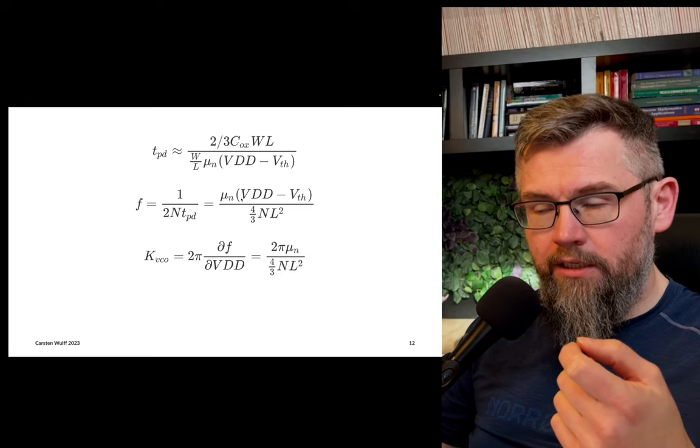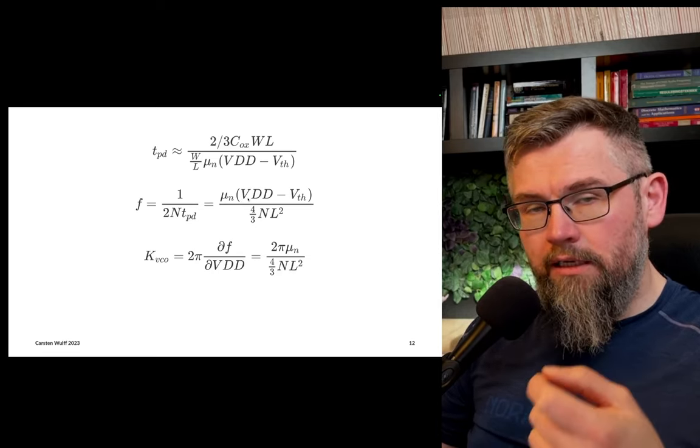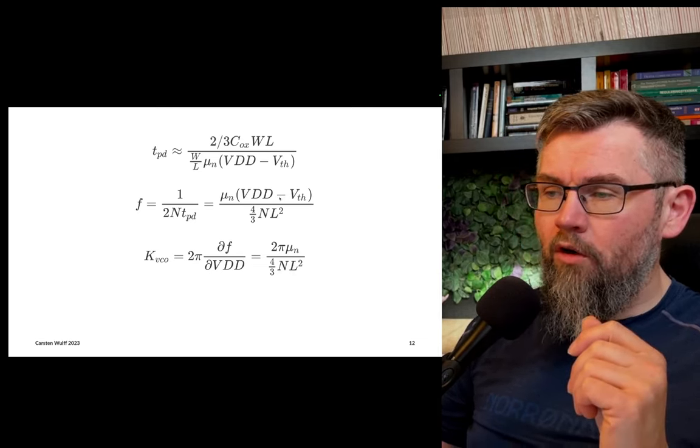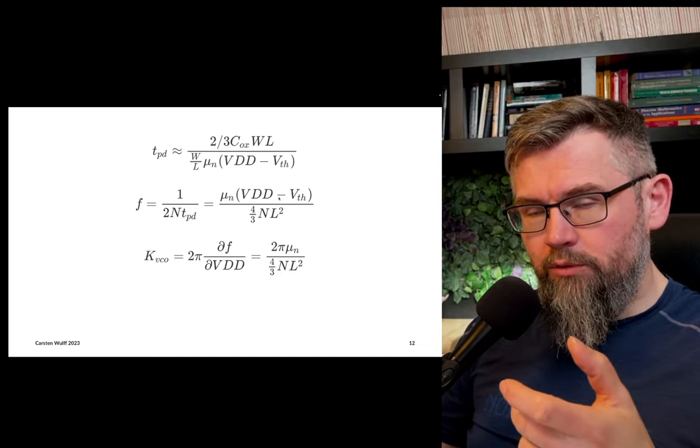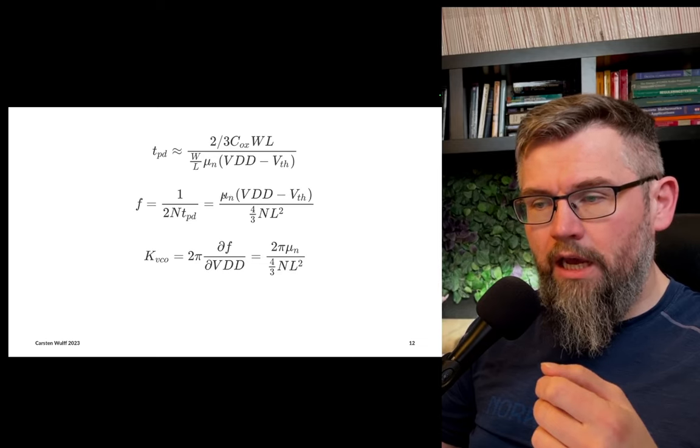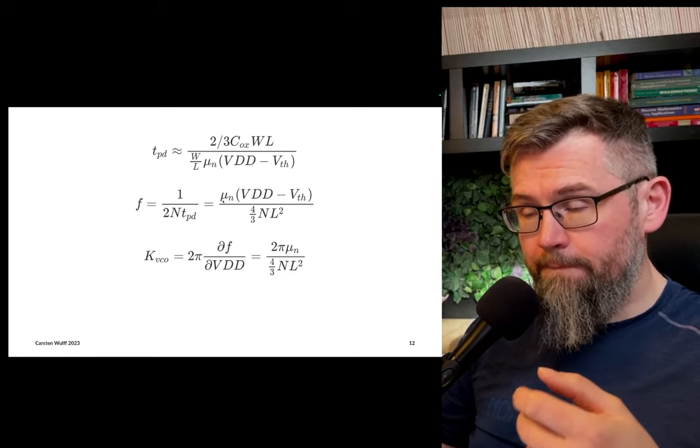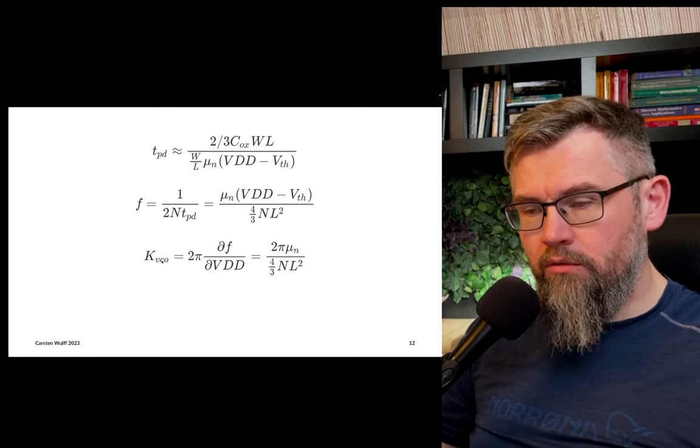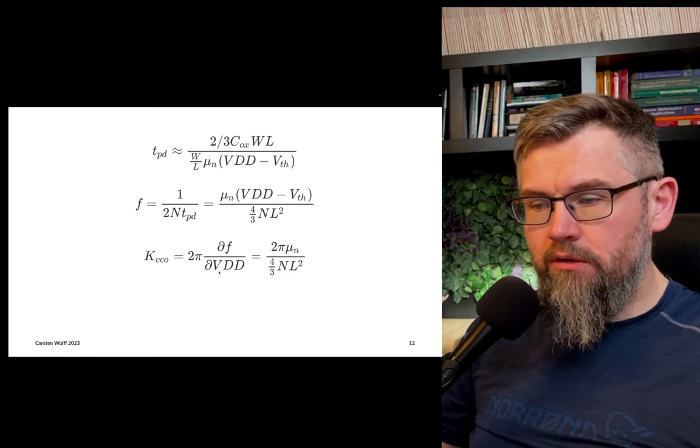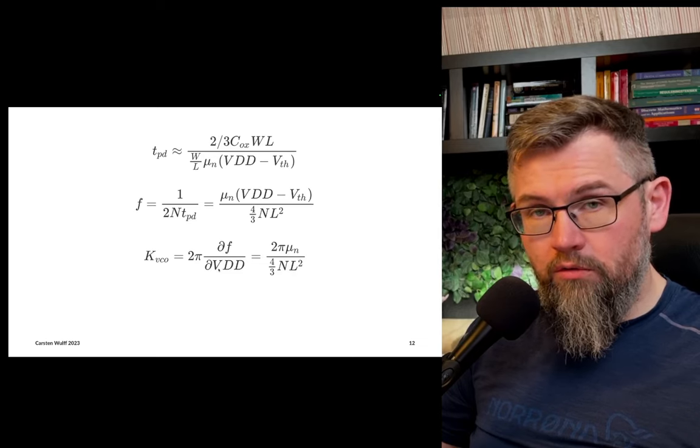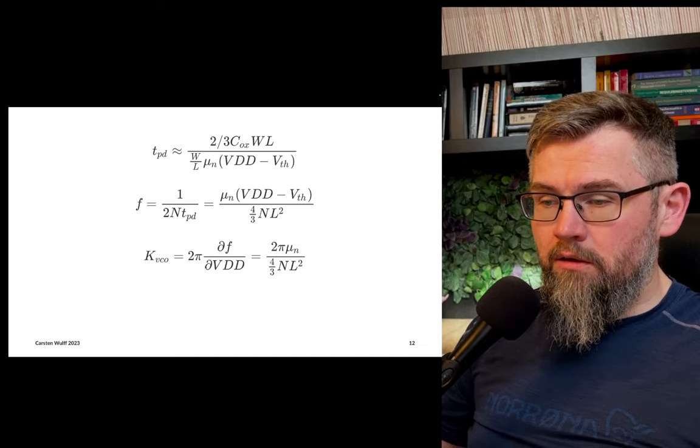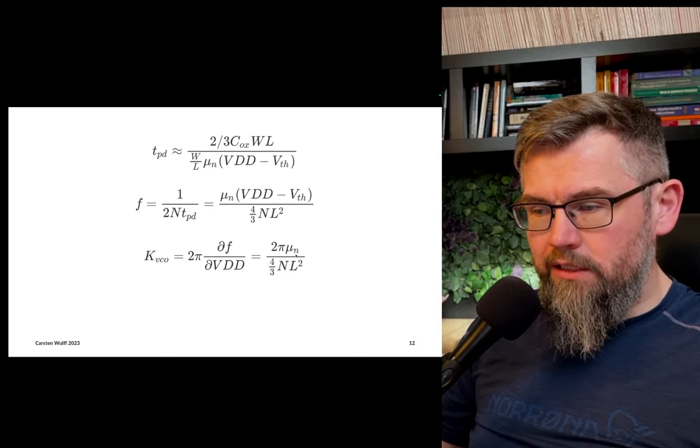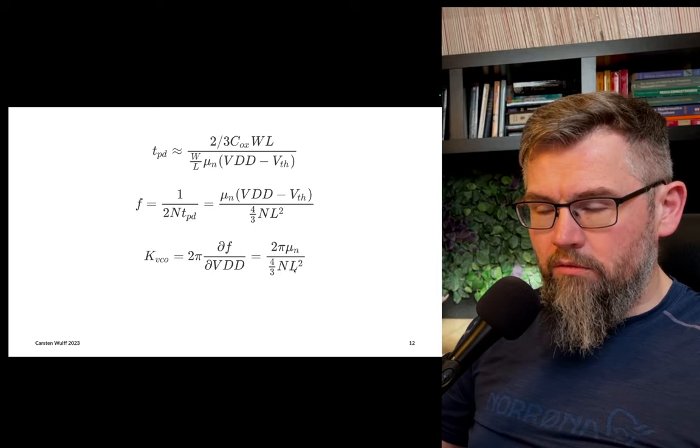Which means that the oscillation frequency is given by the mobility, VDD minus the threshold voltage divided by four-thirds number of stages times L squared. L here is the length of the transistor. From this we can see that we can change the oscillation frequency as a linear function of VDD, assuming the device is mostly in strong inversion. The oscillation frequency will also change with temperature, depending on how the threshold voltage and the mobility changes with temperature. For PLL design, we could also compute a kVCO, the derivative of the frequency as a function of the controlled node, or the VDD in this case. The 2 pi is just convention.